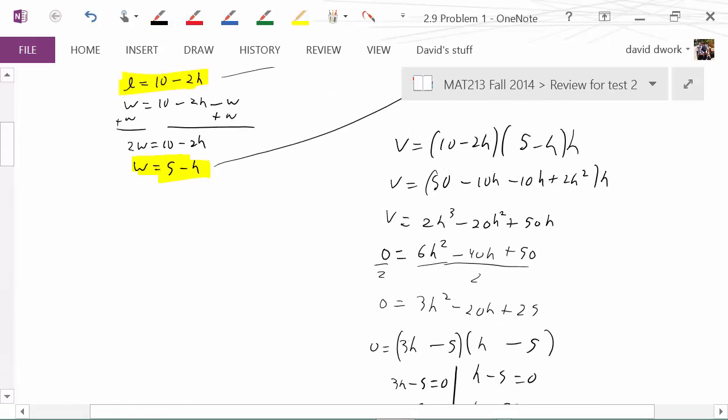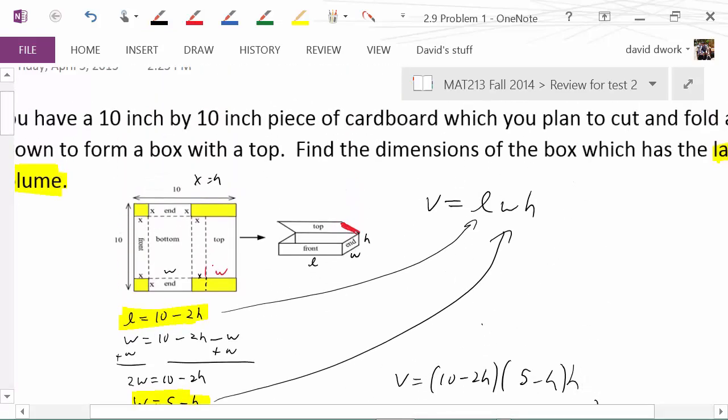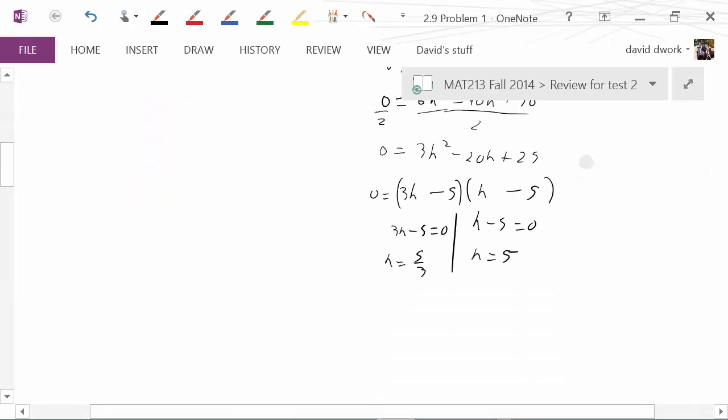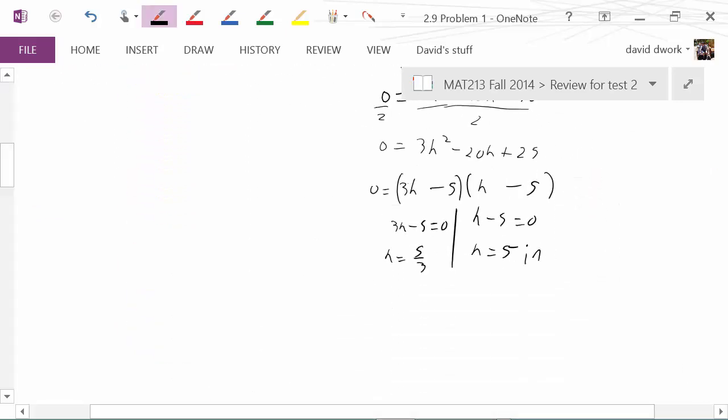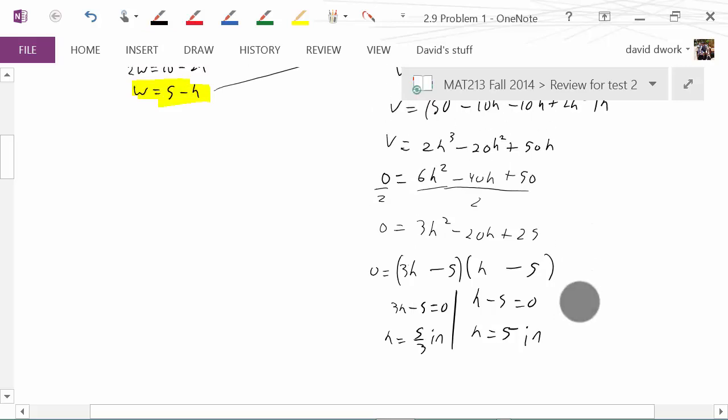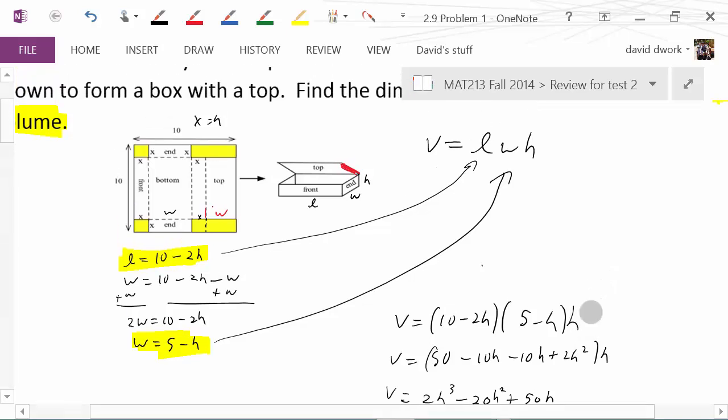This was a 10 inch piece of paper. Since the units were inches, these would also be in inches. I know my height. I have two options that will maximize my volume: either a height of 5/3 or a height of 5 inches.